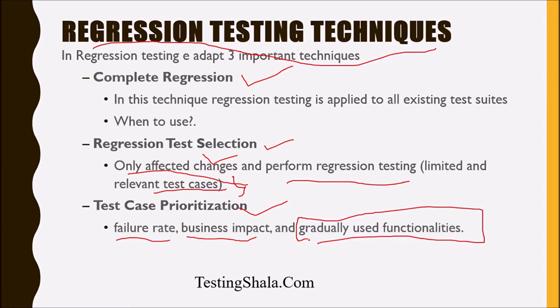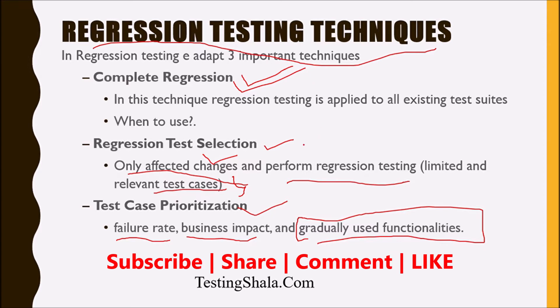Just to recap, there are three important testing techniques used for performing regression testing. First is complete regression testing, where everything gets run due to a bigger change in the code or change in the technology — that is the time we run complete regression. The second technique is running only the area which is impacted when there is a change in the code, limiting our regression testing only to those changes.